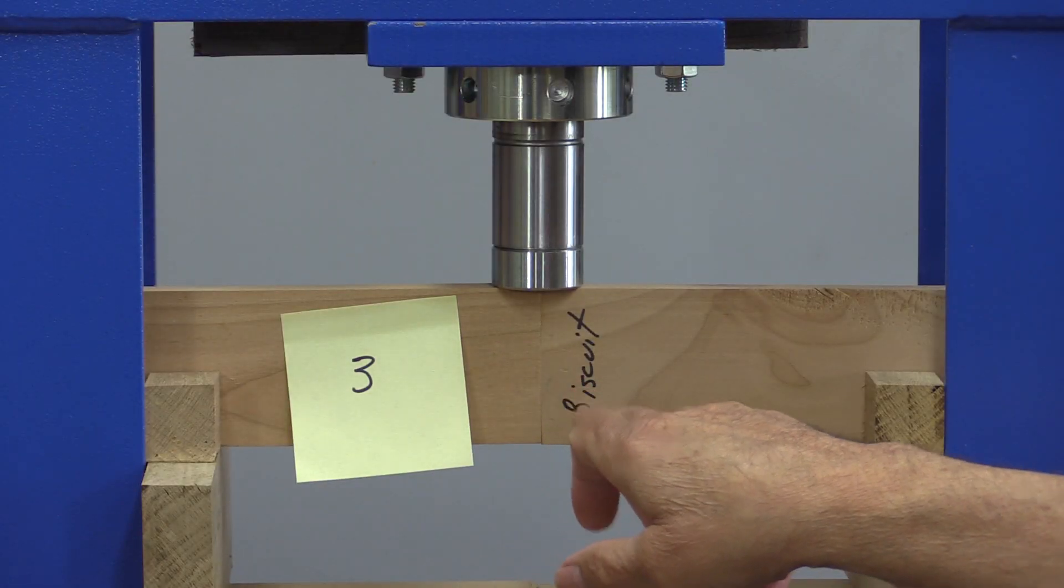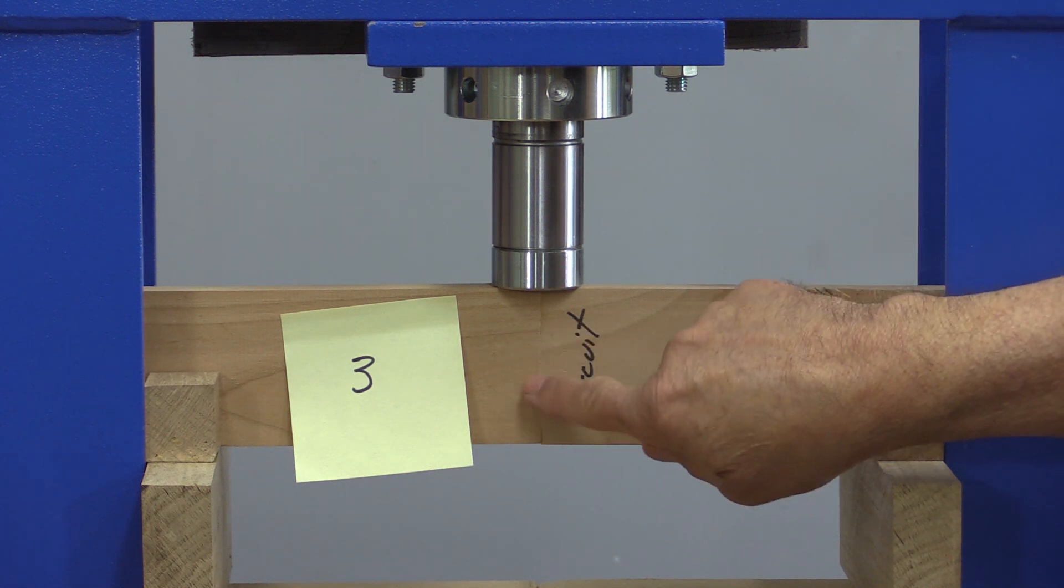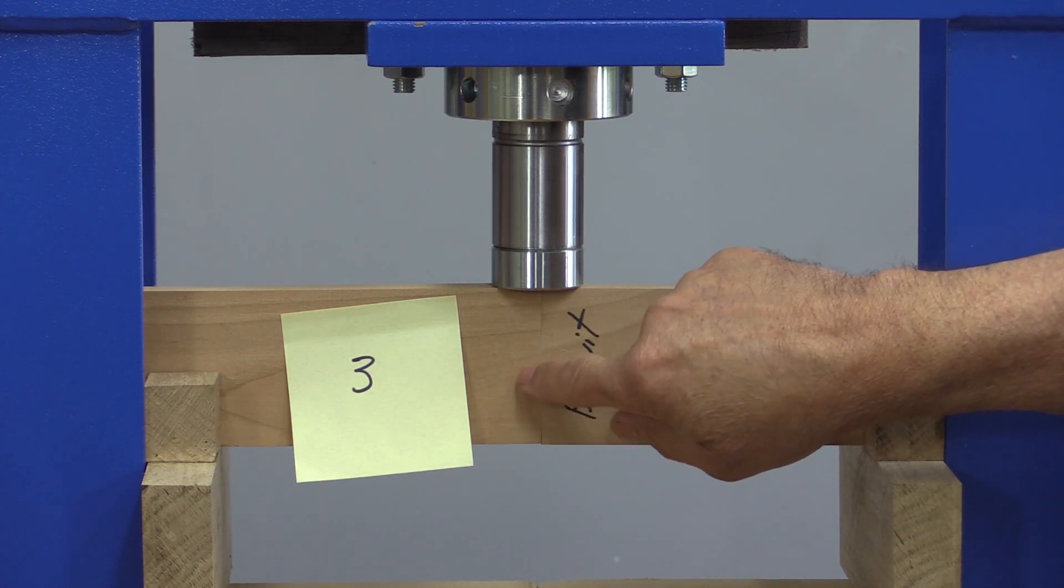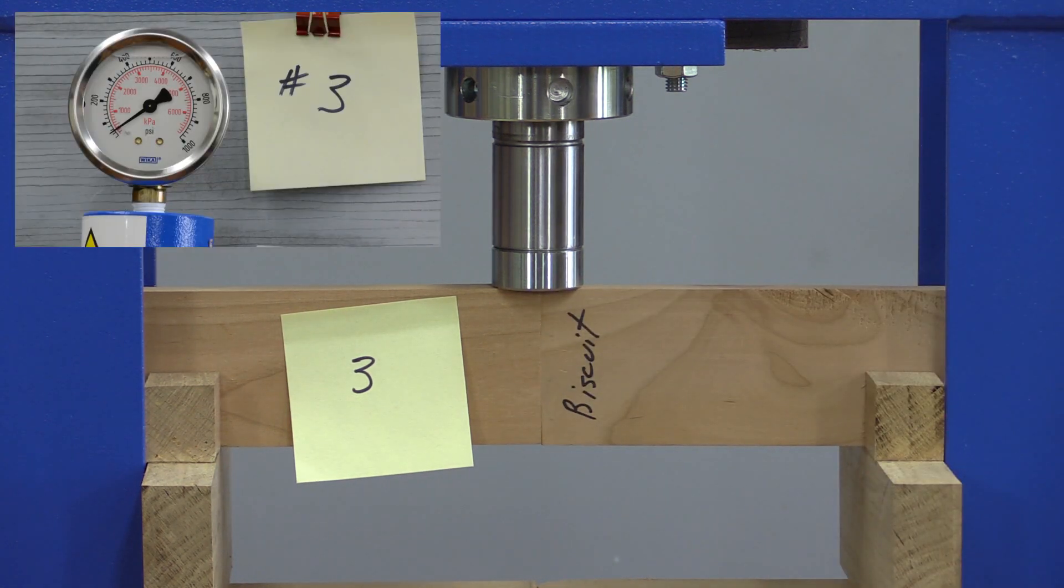Okay, number three is the biscuit joint. And I made a particular effort to make sure it was all very well-glued in there.